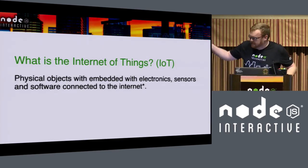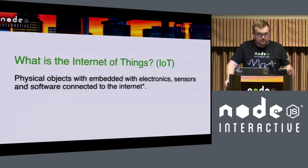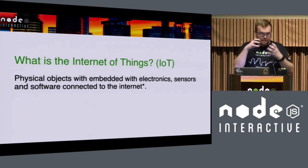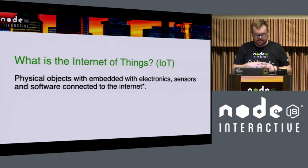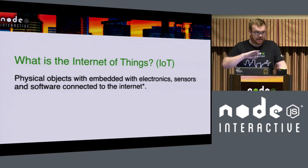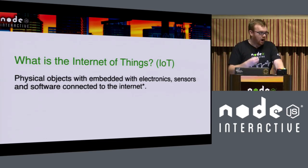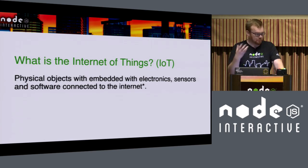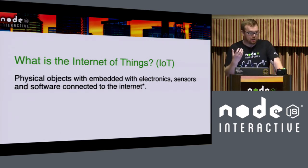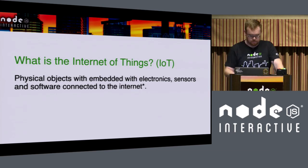So what is the Internet of Things? It's physical objects with embedded electronics, sensors and software that connects to the Internet — whether it connects directly over Wi-Fi, Ethernet, or through a gateway device through Bluetooth, like a smartphone.